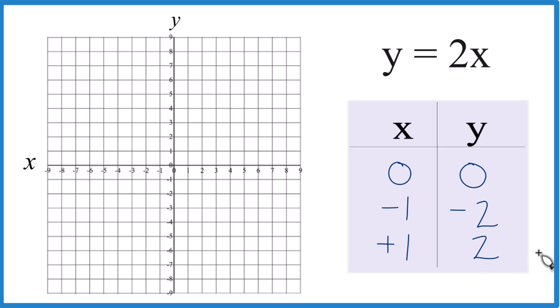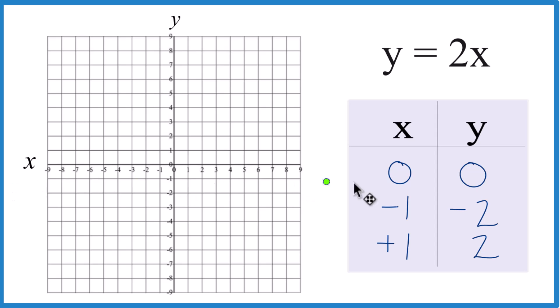Those are the points. Now we can just graph them. So let's see. We have x is 0, y is 0 right here. X is negative 1, y is negative 2. So negative 1, negative 2 for y.